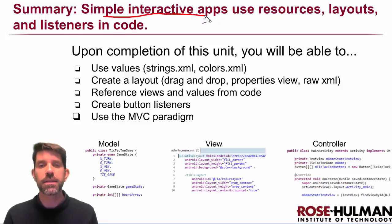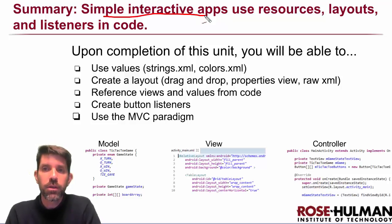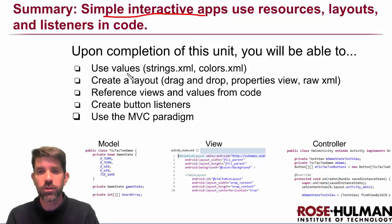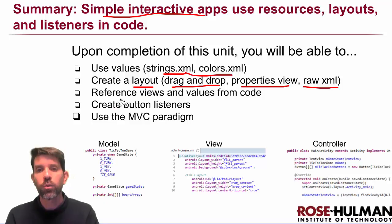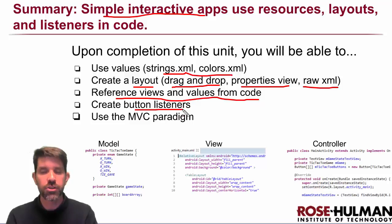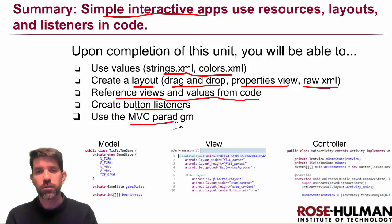Basically, simple interactive apps in Android use resources, layouts, and listeners in code. We learned how to use different strings and colors, how to create layouts — mostly using XML, sometimes drag and drop. The property view on the right-hand side can be helpful. We learned how to reference different things from code, created button listeners, and had a couple different ways of responding.